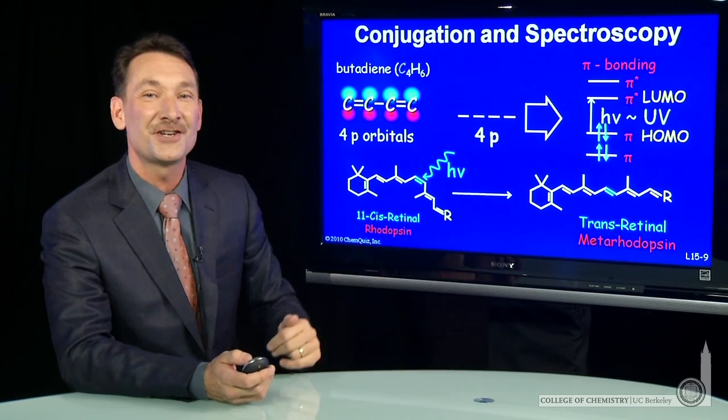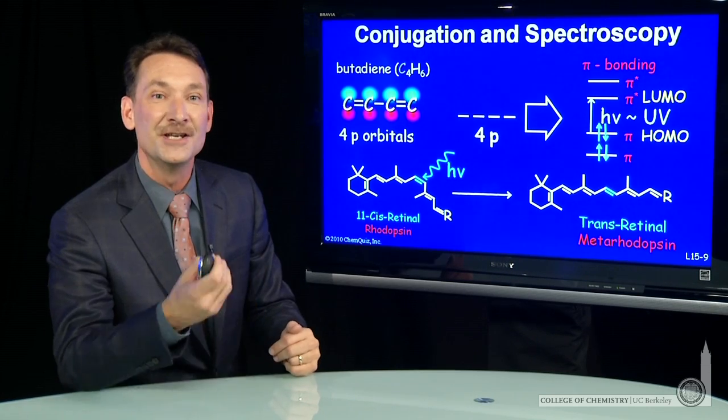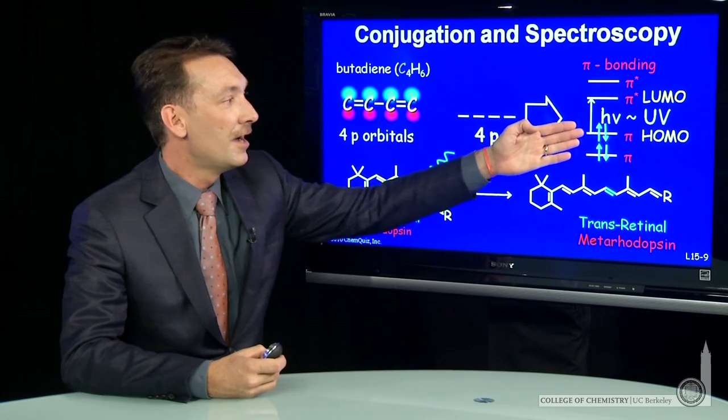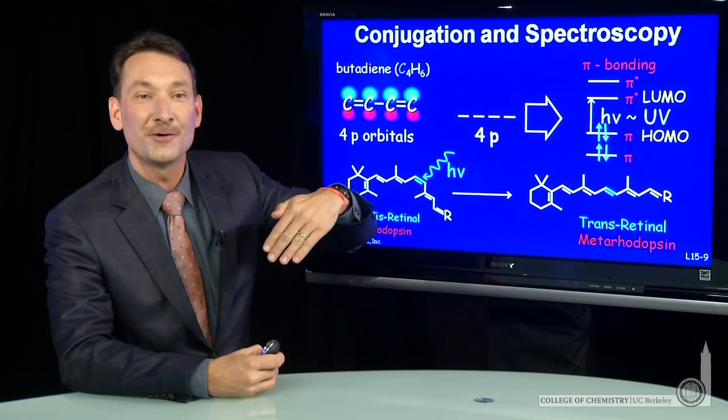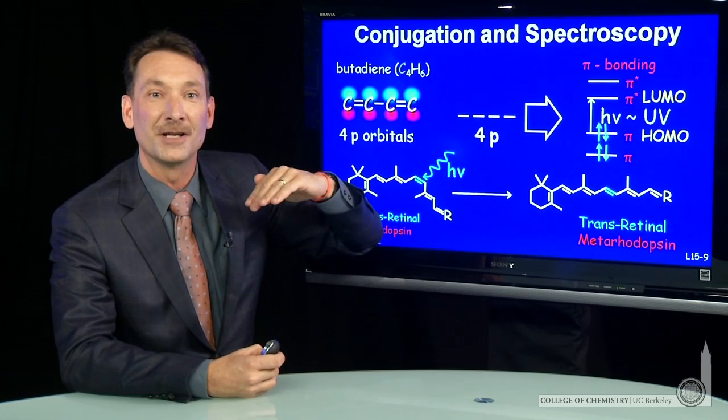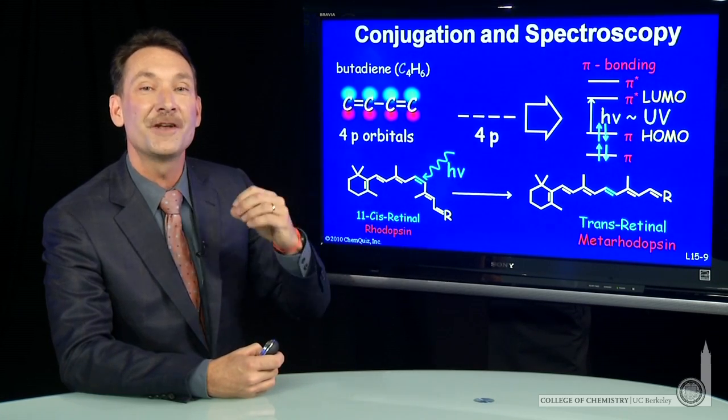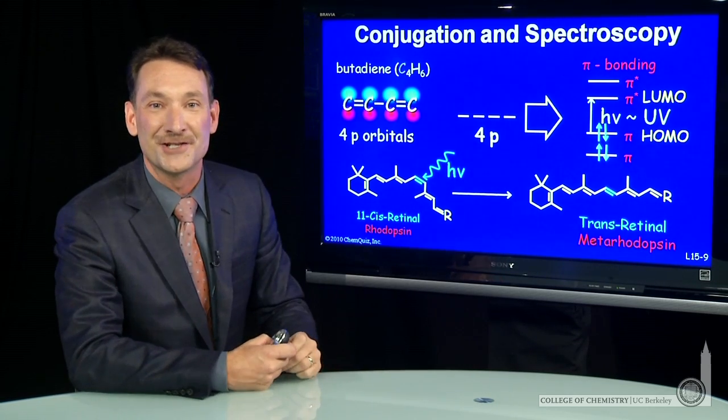So a pi to pi star transition, very important in human vision. Highest occupied molecular orbital to the lowest unoccupied molecular orbital in conjugated systems, often a pi to pi star transition.